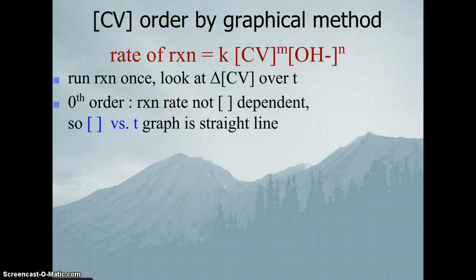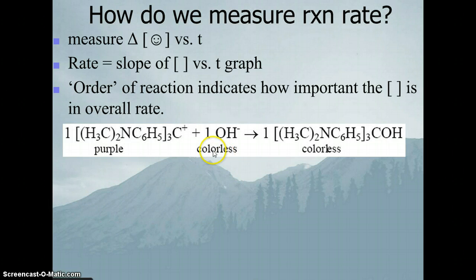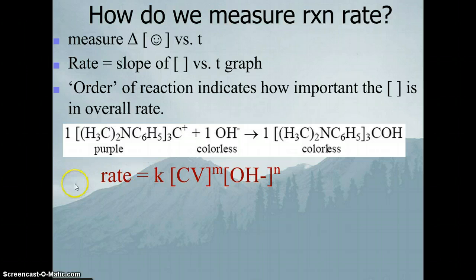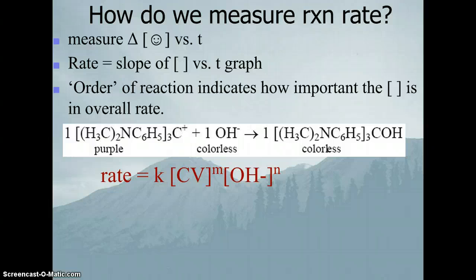The last thing we need to do is determine the value of K. Once we know the order of reaction for hydroxide ion and for crystal violet, we need just one run of data where we know the reaction rate, the concentrations of both crystal violet and hydroxide ion, and their orders — then we can solve for K. We're going to use the short-run data from the initial rates runs, since those are the ones where we calculated the initial rate over 30 seconds.